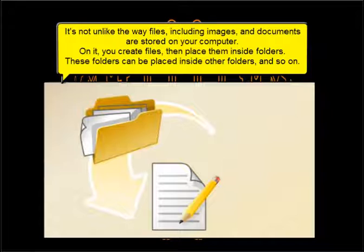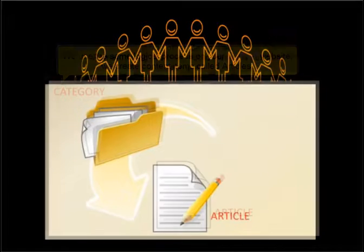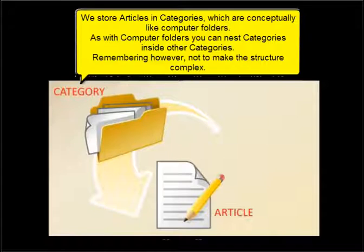On your computer, you create files then place them inside folders. These folders can be placed inside other folders, and so on. We use the same logical process on your website. We create content items called articles, we put articles into categories, which are conceptually like computer folders. As with computer folders, you can nest categories inside other categories — remembering, however, not to make the structure too complex.